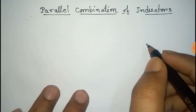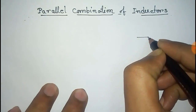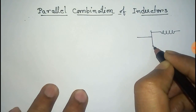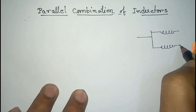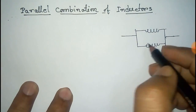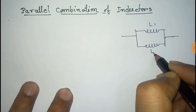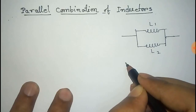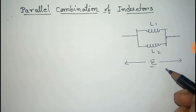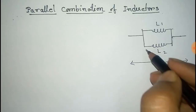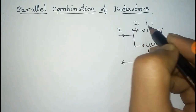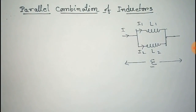This is a parallel combination of inductor circuit. There are two inductors in parallel — let this be L1 and this be L2 — and an EMF is applied across them. The total current in this circuit is i, and it is divided into i1 and i2.